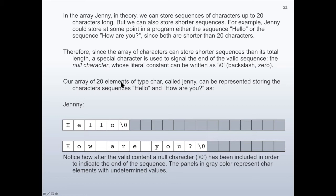Our array of 20 elements of type character, called Jenny, can be represented storing the character sequences 'hello' and 'how are you'. In the first case, we have in the first five locations the letters of 'hello', and just after that, we have the null character. In the second case, we have the letters of the sentence 'how are you', the null character. Notice how after the valid content, a null character zero has been included in order to indicate the end of the sequence. The panels in gray color represent character elements with undetermined values.